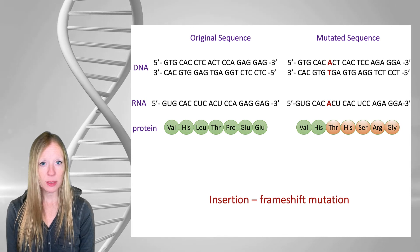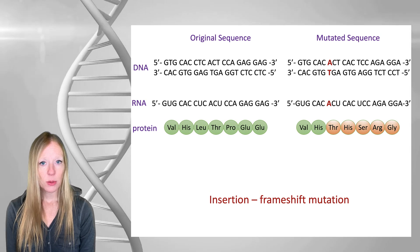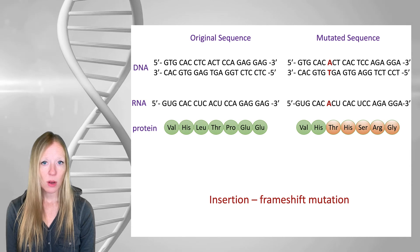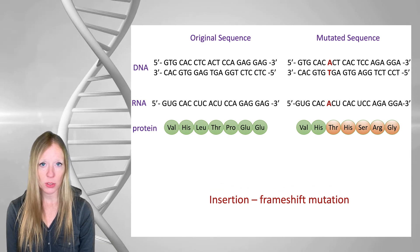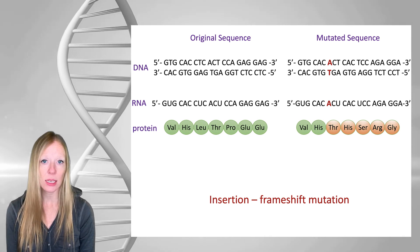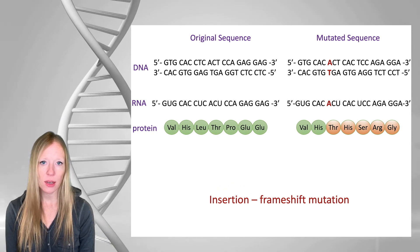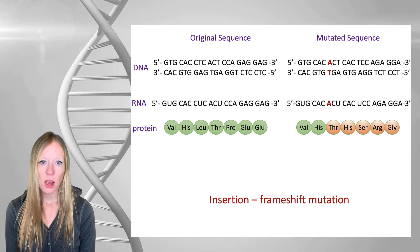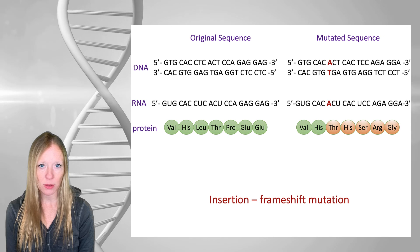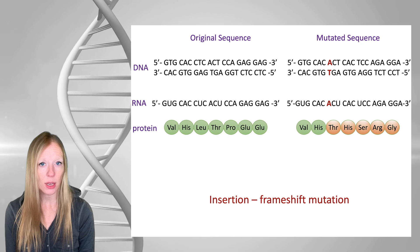Same thing if we delete a single base — we've simply shifted in the other direction, but we're still in the wrong reading frame. So small insertions and deletions that are not multiples of three will cause a frameshift and a huge effect on the protein being produced. Now, if we do have three bases that are inserted, we've added an extra amino acid, but other than that we would still be in frame. This could definitely have an effect on the protein, and it could even abrogate its function, but the odds of a non-functional protein from this insertion are less than if we have a frameshift. Frameshift mutations often result in early stop codons and therefore a truncated protein.